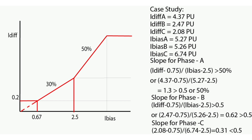So the indication shown by the relay — phase A differential trip and phase B differential trip — is correct and true. If you like this video, please visit my channel, subscribe, and press the bell button for notifications of future videos. Thank you for watching.